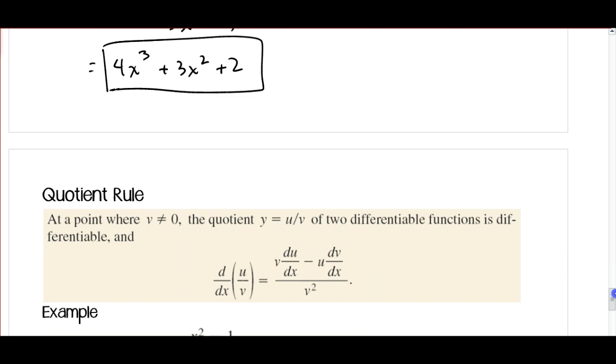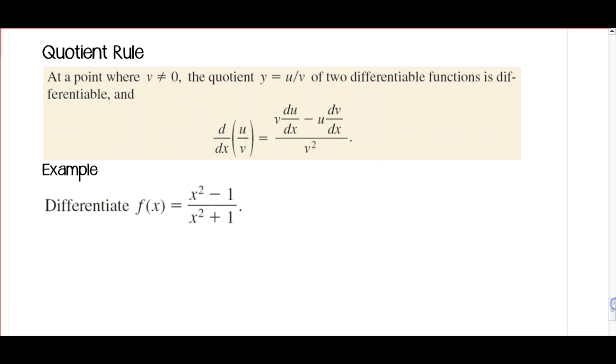All right, moving on to the quotient rule. So at a point where v does not equal 0, because we've got v in the denominator here, the quotient y equals u over v of two differentiable functions is differentiable, and our quotient rule over here, we've got v du/dx minus u dv/dx. So similar to the other one, but a little bit different, and then we're going to divide it by v squared.